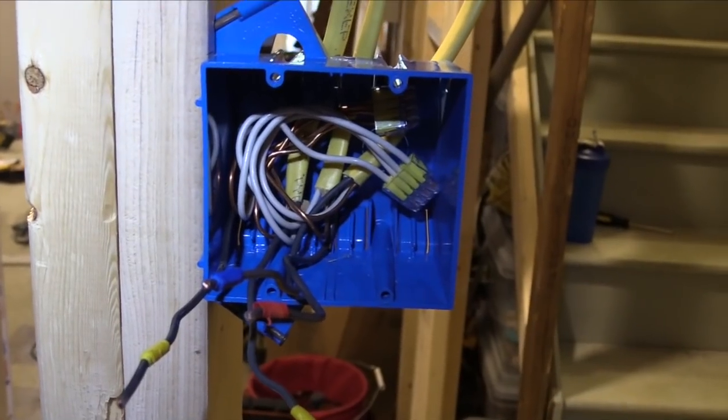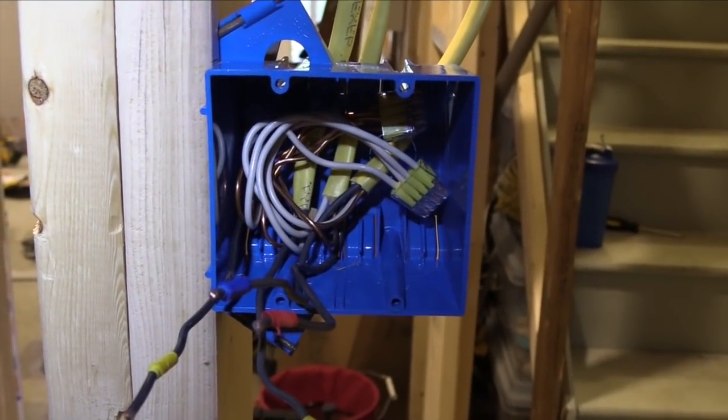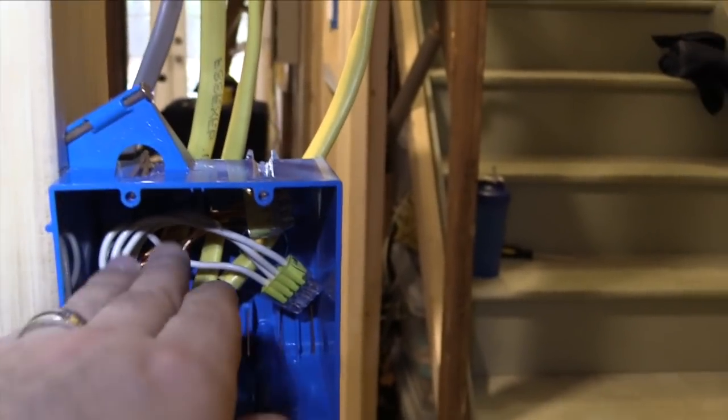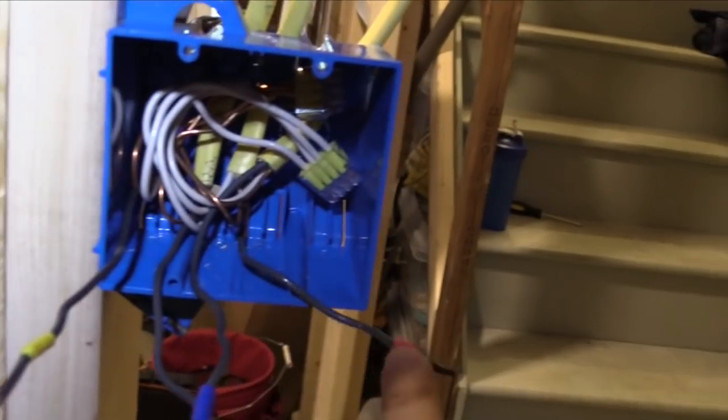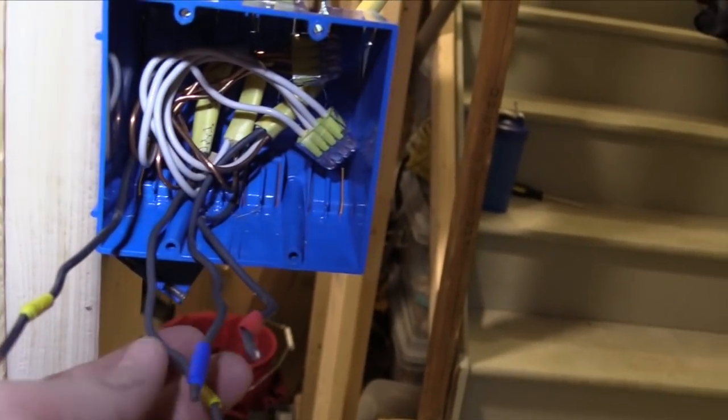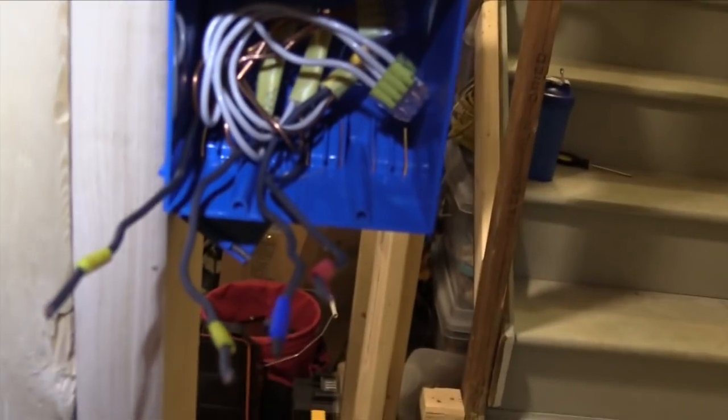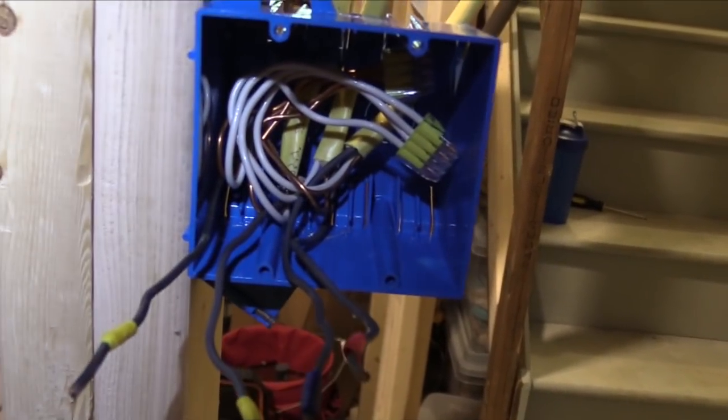Just pop them in, and then it's going to look like that once you push them all in. I put the copper and the white, kind of folding them in back there out of the way. And then now I have the black wires, and I'm going to hook those up as I've color coded on the diagram.